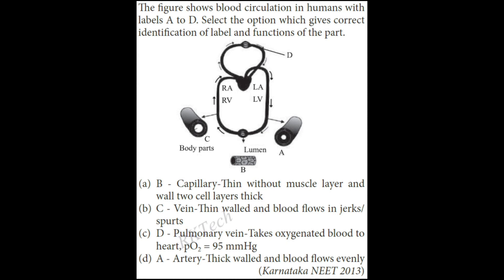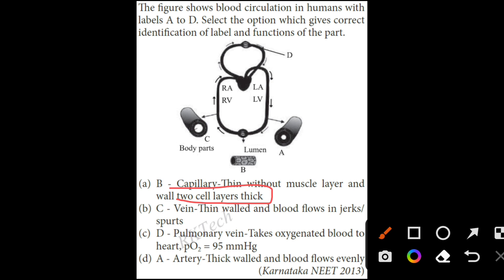The figure shows blood circulation in humans with levels A to D. Select the option which gives correct identification of levels and their functions. Level B is capillary — it has a thin wall with no muscle layer, and the wall is one cell thick. Level D is pulmonary vein, which takes oxygenated blood to the heart, with high PO2. Option C will be correct.